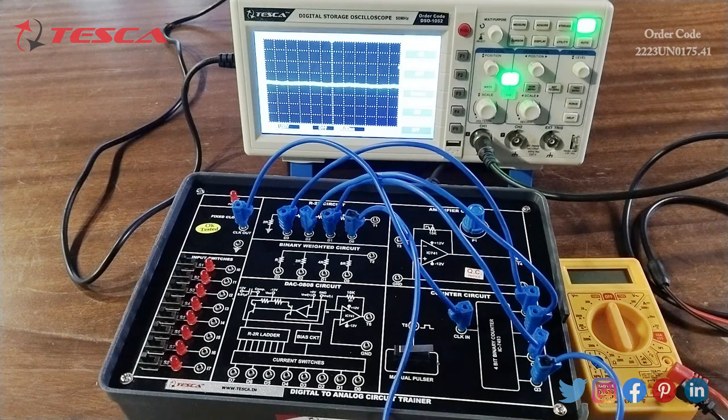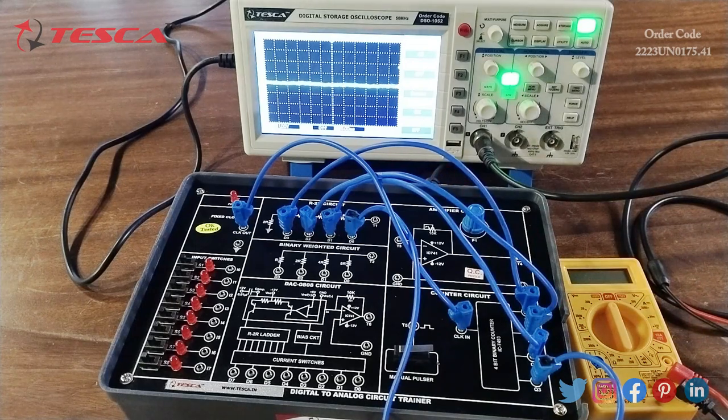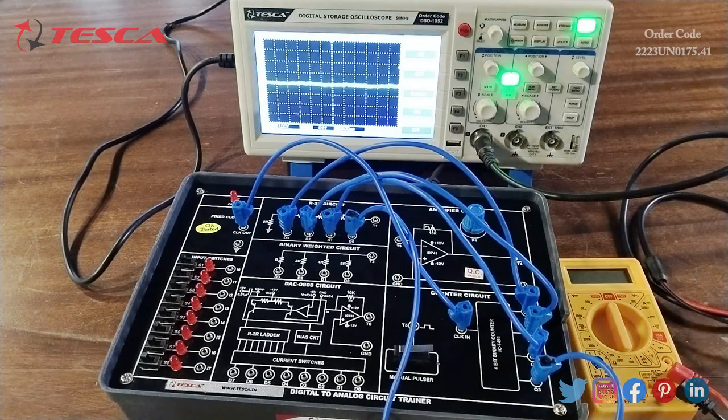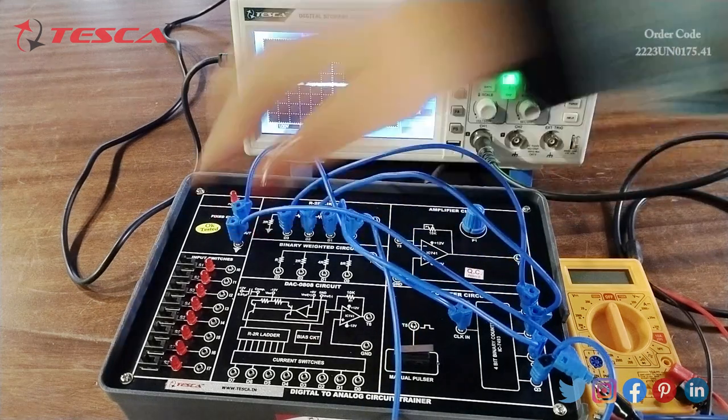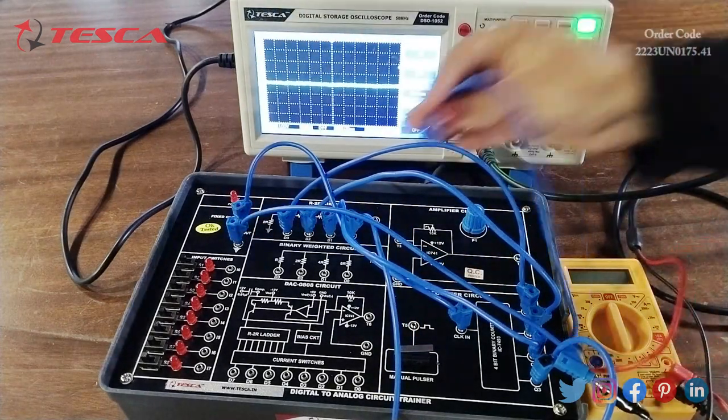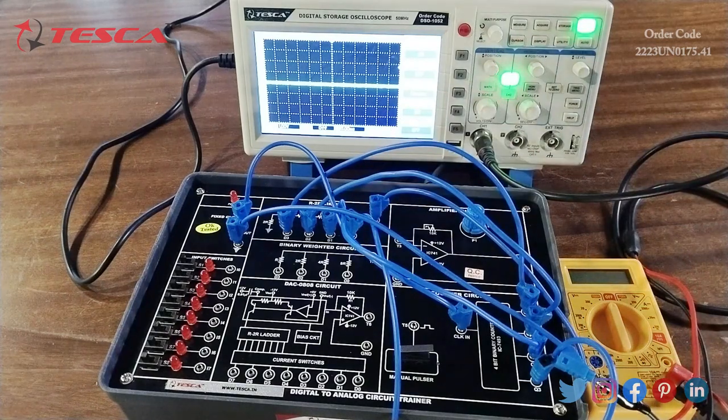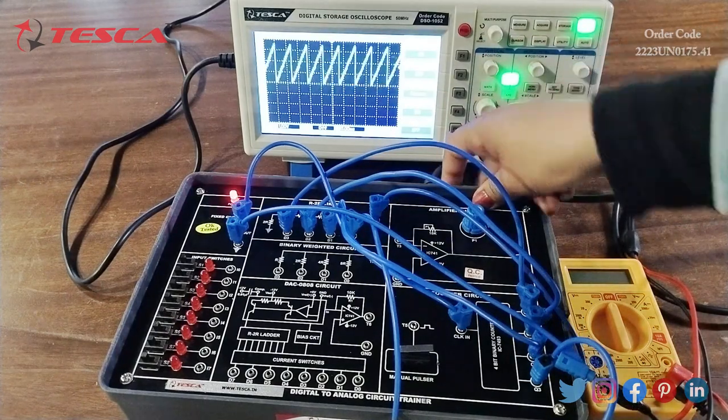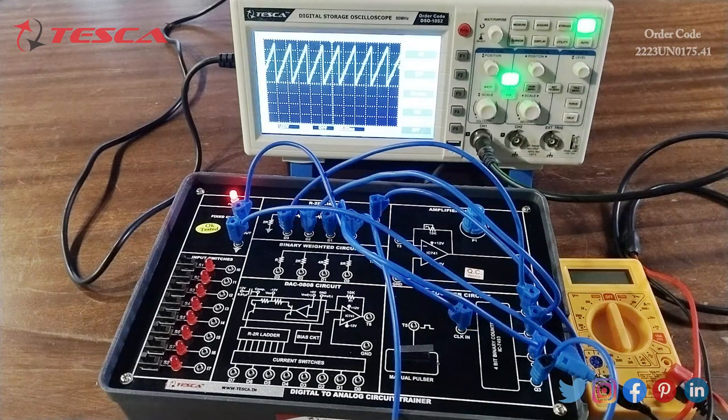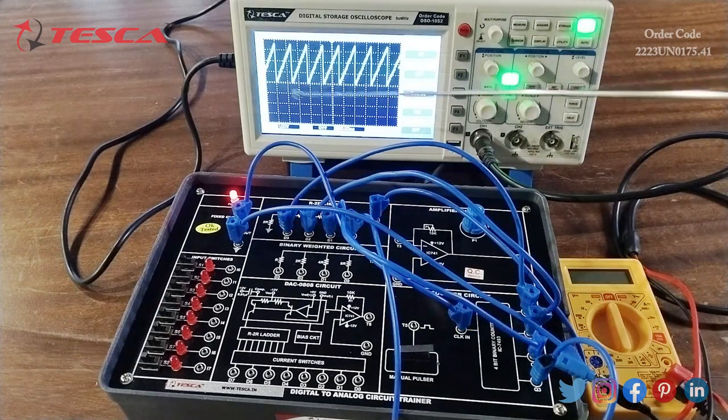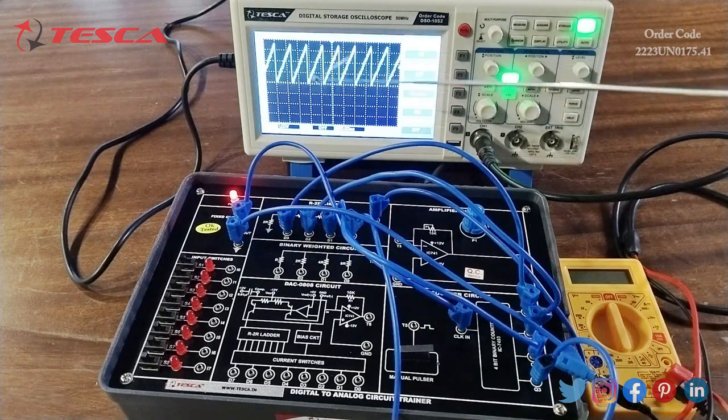And then I will connect the channel 1 to the ground and the T1. Then I will switch on. You can see on the display of DSO, it's showing the staircase output.